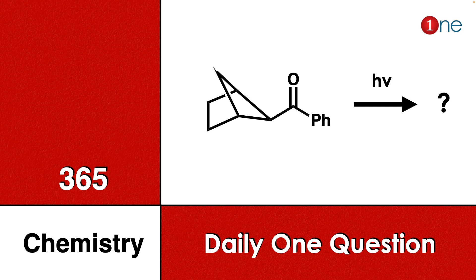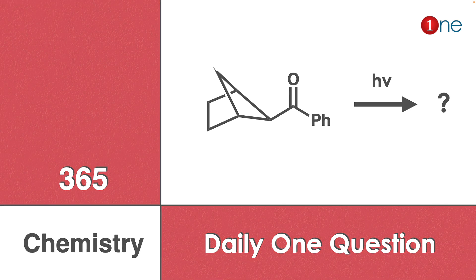Welcome to One Chemistry. This is the 365 Chemistry series — one question daily for you. Here you have a given bicyclic system: on one side a carbonyl, on the other side a phenyl group. This bicyclic system is reacting with light. You have to guess the final product.